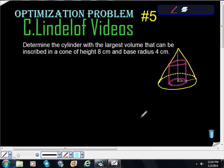C. Lindelof Videos, optimization problem number five. Determine the cylinder with the largest volume that can be inscribed in a cone of height 8 centimeters and base radius 4 centimeters.